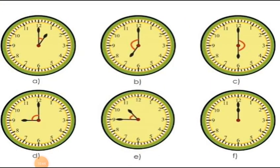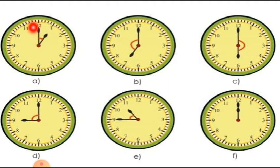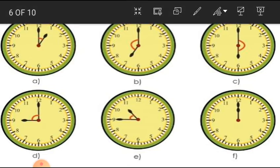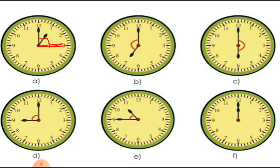Identify the types of angles formed by the hands of each clock. Here, this is one arm and this is another arm — which type of angle is this? It's an acute angle. If one needle were pointing straight out like this, that would be a right angle, but it is less than that — smaller — so it is an acute angle.